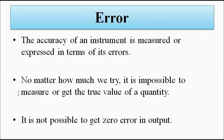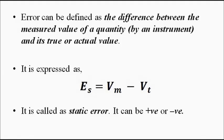The accuracy of an instrument is actually represented in terms of its error. No matter how much we try, there will always be error in measurement — the value of error can be less or more, but there will always be error. It is not possible to get zero error in the output. Error is defined as the difference between the measured value of a quantity and the true value.